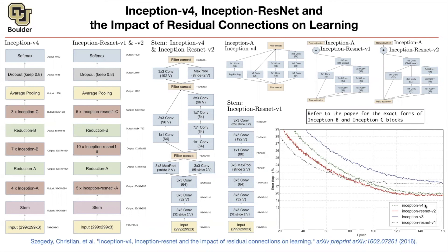We are one minute over time, but feel free to ask questions or leave. A question came up about hyperparameter optimization in these state-of-the-art networks. There is a field called AutoML — if you refer to the syllabus, we are going to cover that after going through small networks. We'll do automatic machine learning, and that covers hyperparameter optimization.